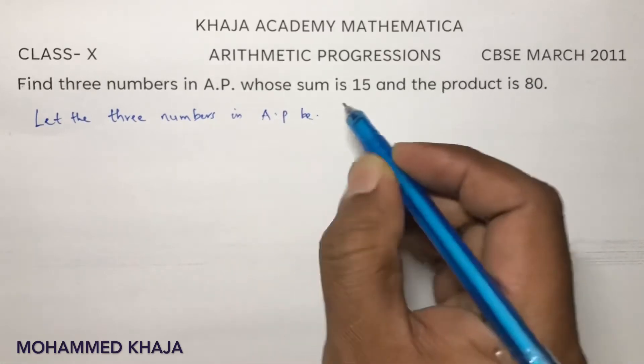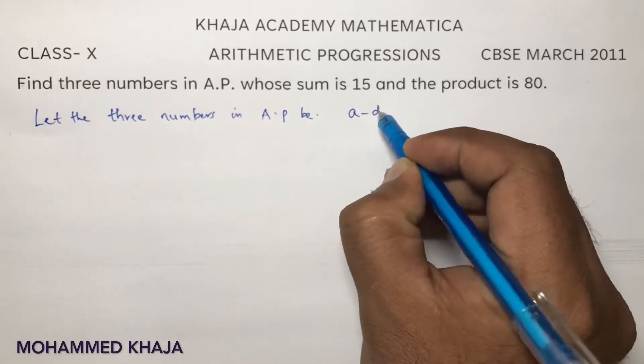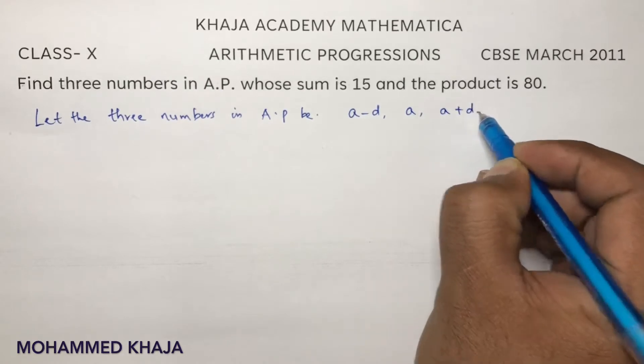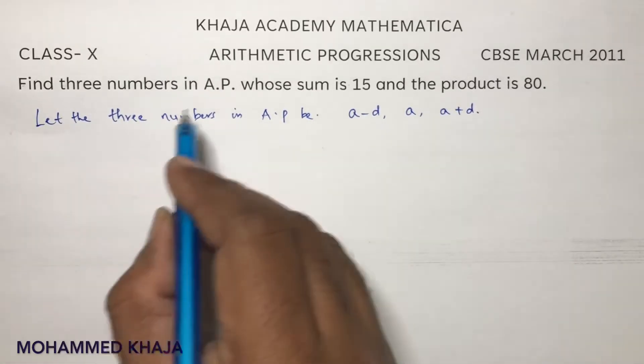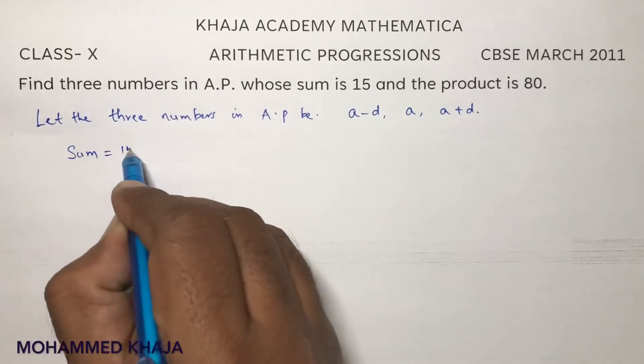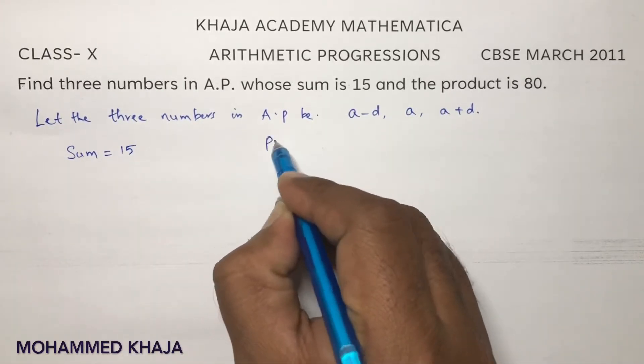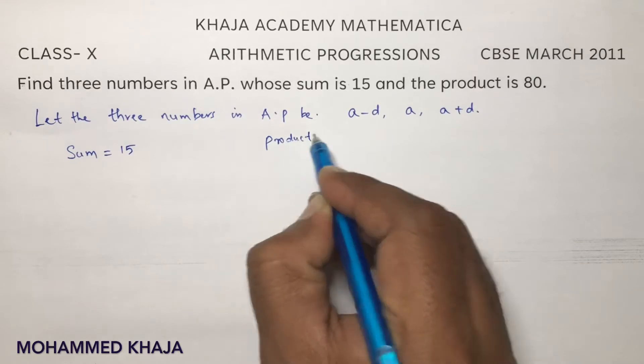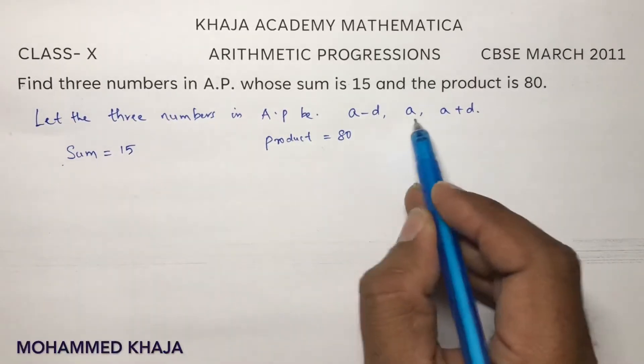You see, if you take the three numbers as A minus D, A, and A plus D, then the problem will become easy. Now see here, whose sum is 15 and product is 80. So sum, add these three numbers.